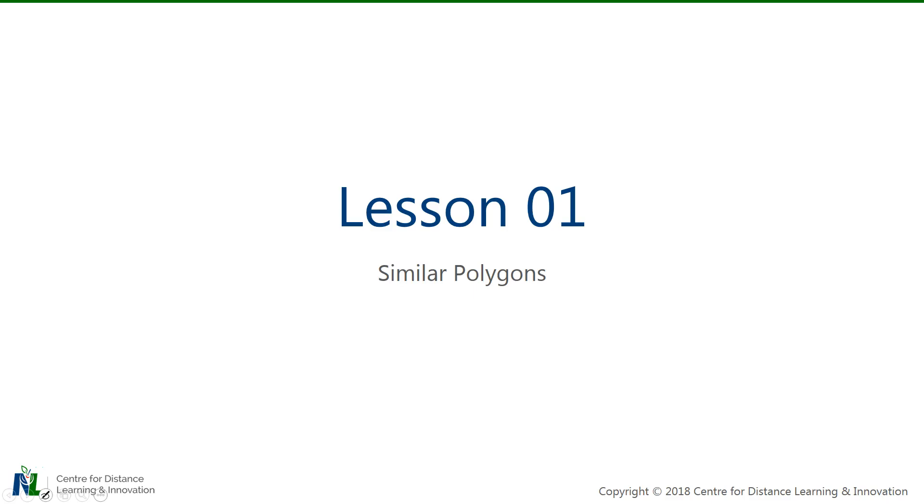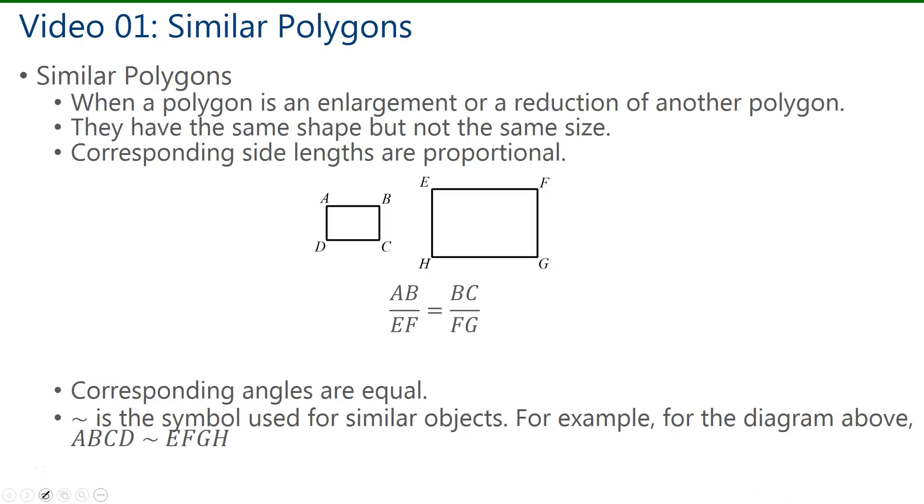Welcome to Lesson 1 on Similar Polygons. When we have similar polygons, then a polygon is just an enlargement or a reduction of another polygon. And as a reminder, a polygon is just a closed shape made up of straight lines.